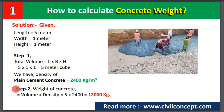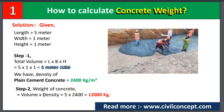In step number two, we calculate the weight of concrete. Weight of concrete = Volume × Density. Volume is 5 cubic meters and density is 2400 kg per cubic meter. After multiplying, we get 12,000 kg. So the weight of 5 cubic meters of plain cement concrete is 12,000 kg.